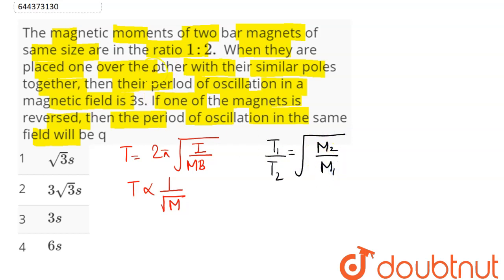In the initial case, it is given that they are placed with the same poles together. Here we can say this is first and this is second. So this magnetic moment is M and this magnetic moment is 2M. Same poles together means south-north and this is also south-north. So in the first case, the resultant M1 can be written as M plus 2M which comes out to be 3M.